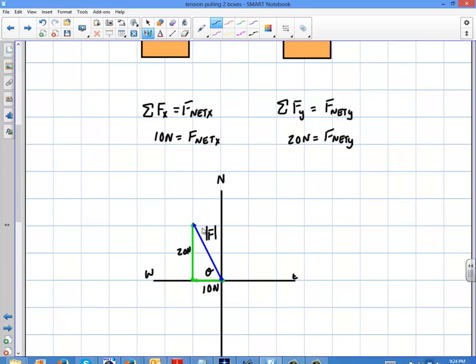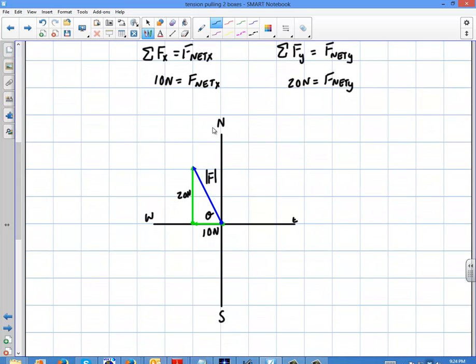All right, so now we need to find the magnitude and the angle of this. We're going to do that by doing the Pythagorean Theorem with the x component here and the y component here.